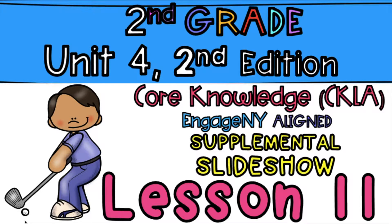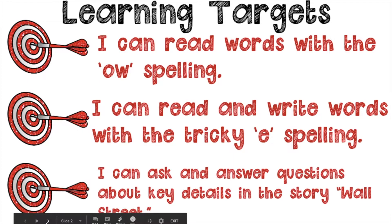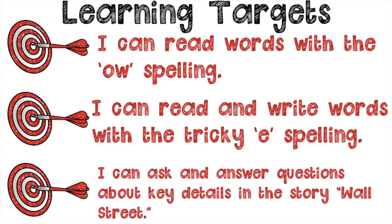Welcome to lesson 11 of Skills. Our learning targets for today: I can read words with the O spelling, I can read and write words with the tricky E spelling, and I can ask and answer questions about key details in the story Wall Street.